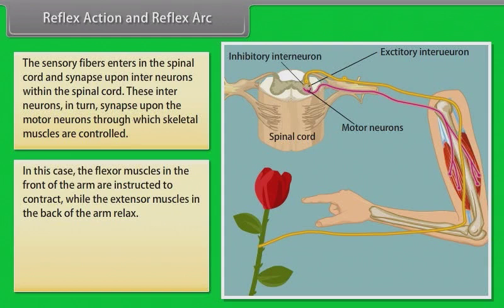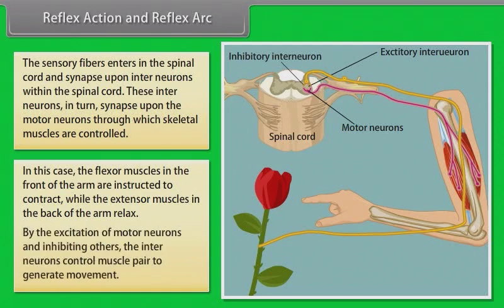The flexor muscles in front of the arm are instructed to contract while the extensor muscles in the back of the arm relax. By exciting some motor neurons and inhibiting others, the interneurons control the muscle pair to generate movement.